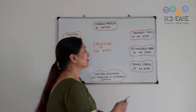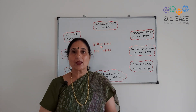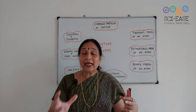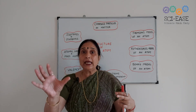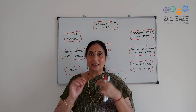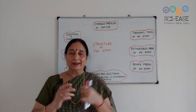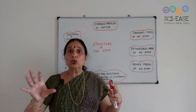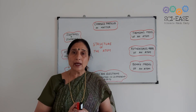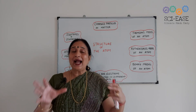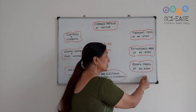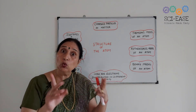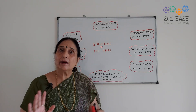Next comes Bohr's model of an atom. Bohr discovered that electrons revolve in definite paths known as orbits or shells. Electrons revolve in these shells according to the 2n² rule, which we will study in detail. He told that electrons revolve and they do not lose radiation while they are revolving.